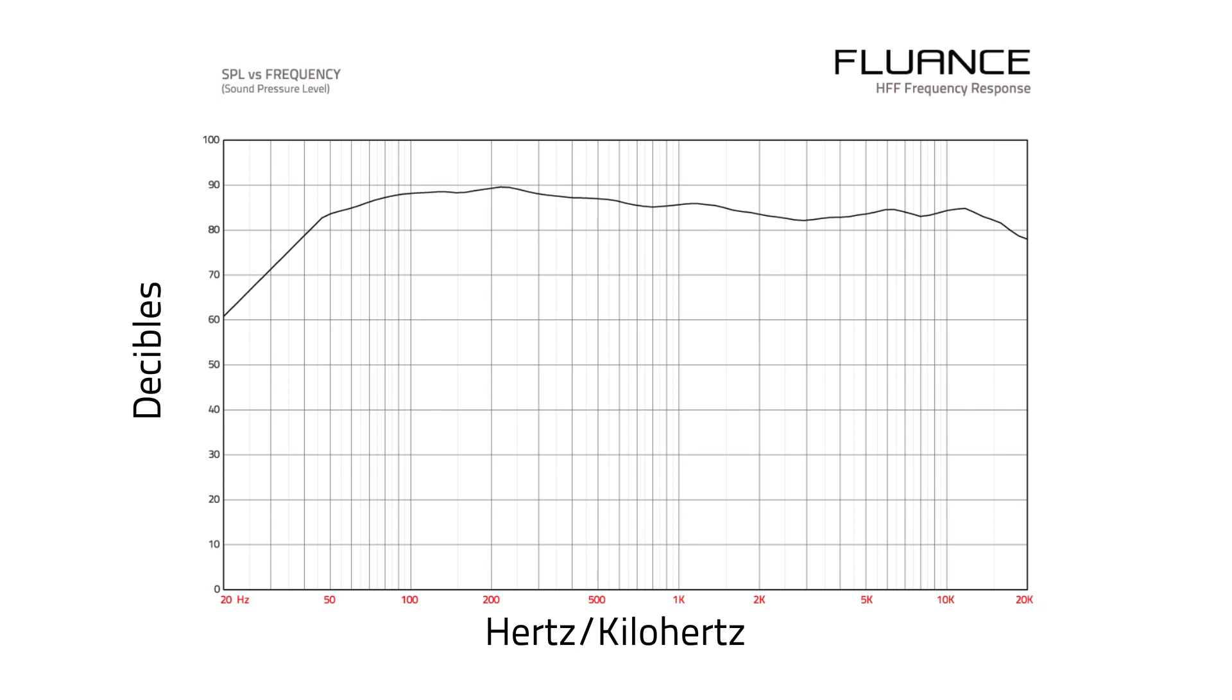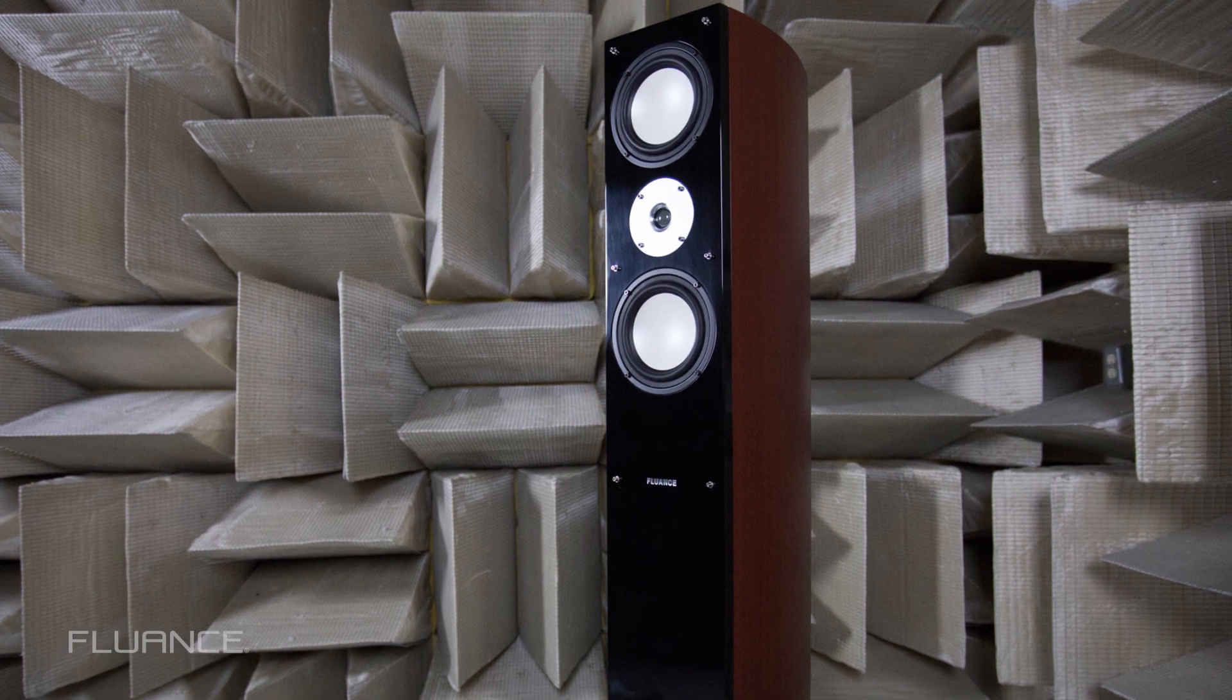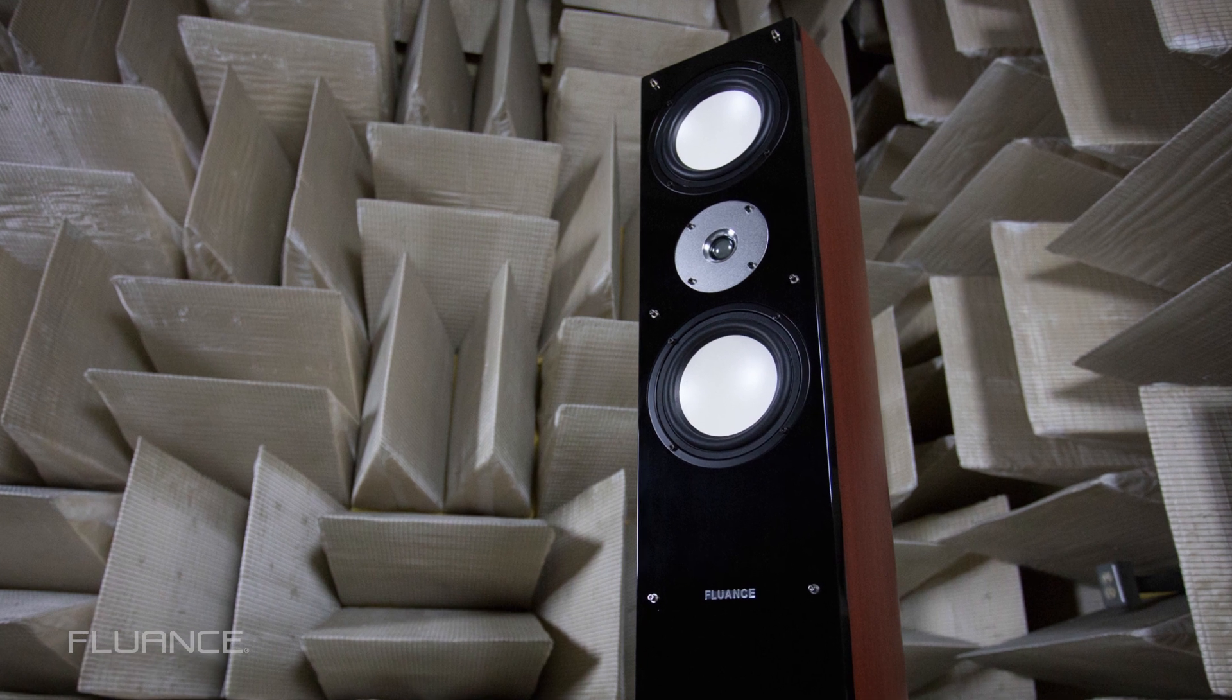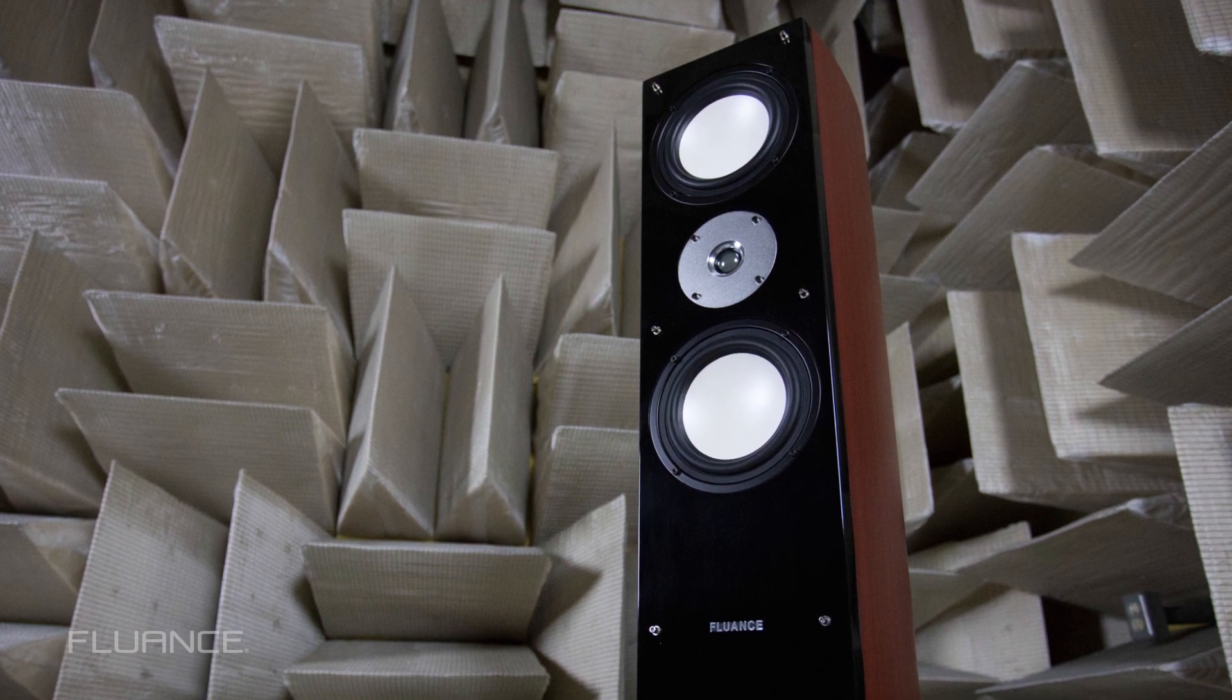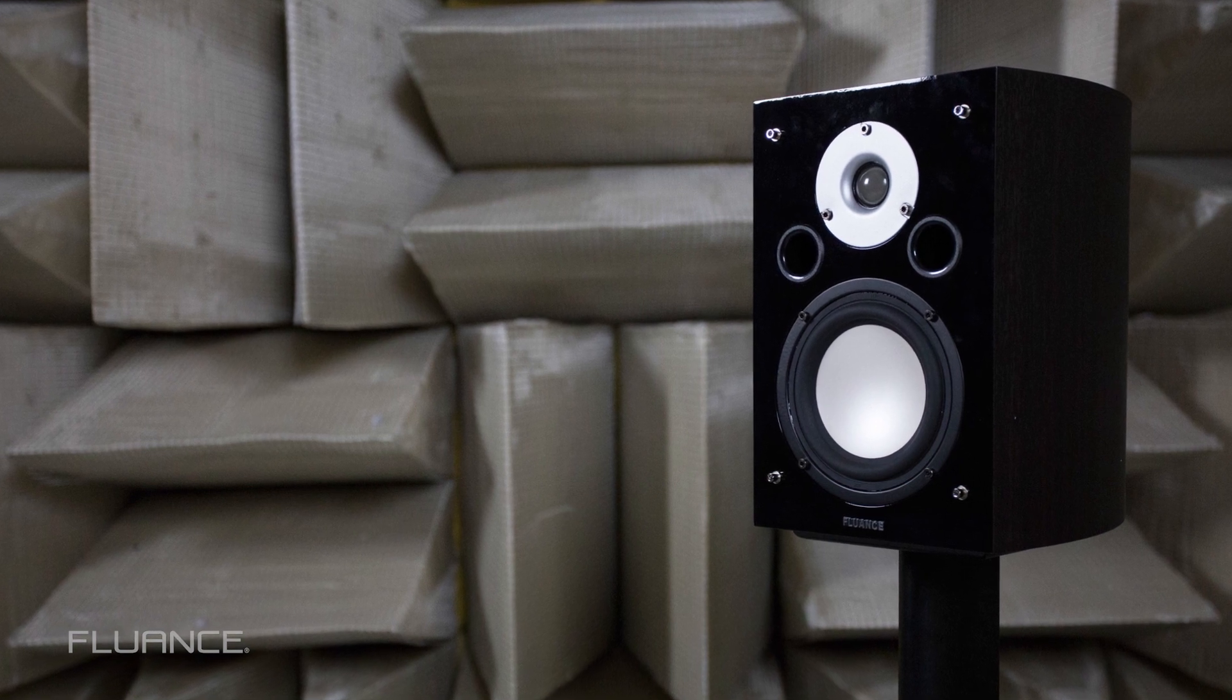Sound engineers measure a speaker's ability to reproduce sound accurately by placing it in a room with sound absorbing fiberglass wedges and a calibrated microphone placed directly in front of the speaker. The engineer then feeds a tone to the speaker that contains all of the frequencies within a response range at equal volume.